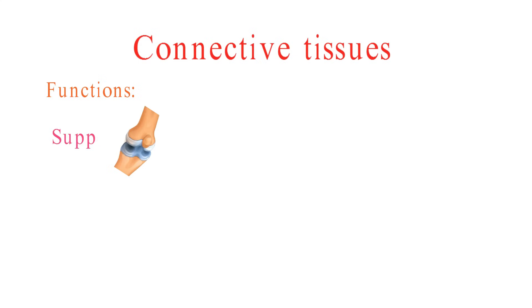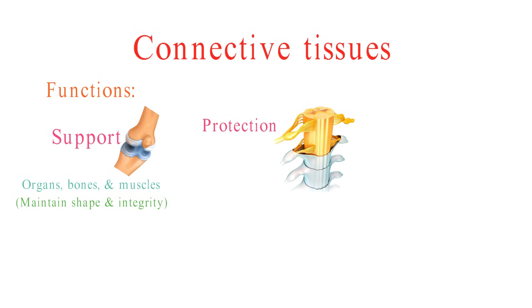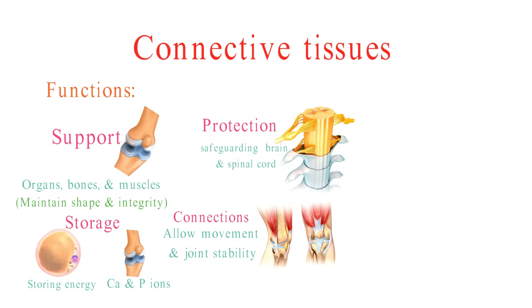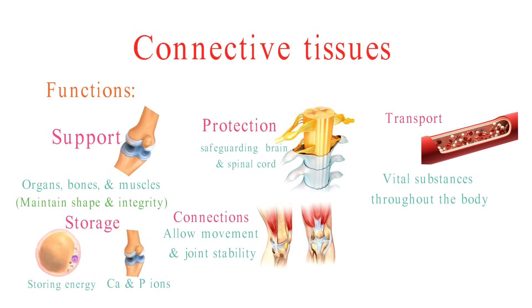Connective tissues serve several vital functions in our bodies. They provide structural support to organs, bones, and muscles, ensuring our bodies maintain their shape and integrity. Connective tissues also offer protection, such as bones safeguarding vital organs like the brain and spinal cord. They facilitate connection by forming tendons and ligaments, allowing for movement and joint stability. Additionally, adipose tissue stores energy and bones store minerals like calcium and phosphorus. Blood transports vital substances throughout the body, and connective tissues also house immune cells, contributing to our body's immunity against infections and diseases.